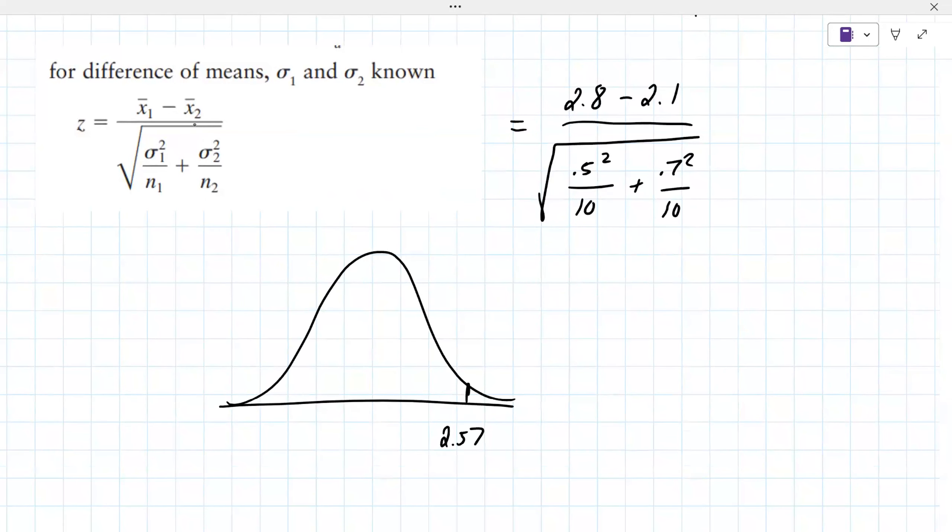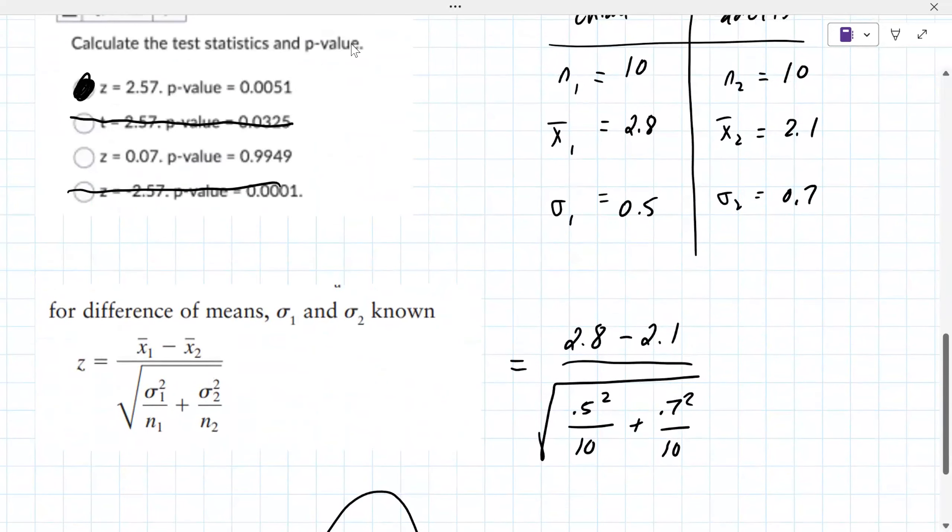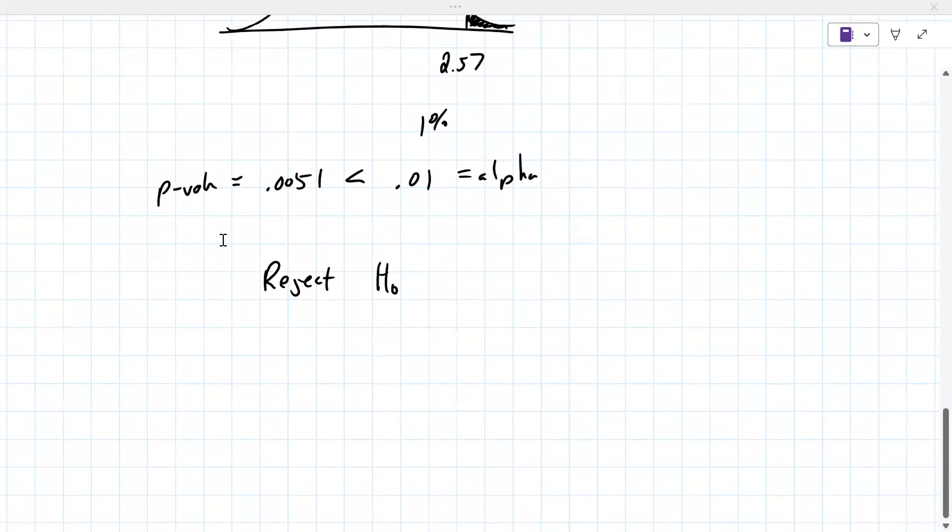Here's your Z 2.57, it's the area in the tail, which ends up being, if you do that lookup which can be done in the calculators, 0.0051. So your P value which is 0.0051 is less than your level of significance, your alpha. It says 0.01 or 1% as your alpha, you reject H0.